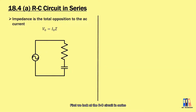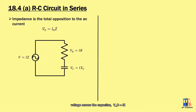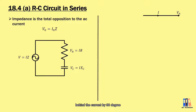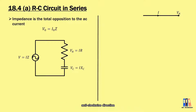First, we look at the RC circuit in series. We have the AC voltage V = IZ, the voltage across the resistor VR = IR, and the voltage across the capacitor VC = IXC. Now we are going to draw the phasor diagram. Conventionally, we draw the direction of the current to the right, and the voltage across the resistor is in phase with the current. For the voltage across the capacitor, we have learned that it is lagging behind the current by 90 degrees. The positive direction in the phasor diagram is the anti-clockwise direction, so the voltage across the capacitor will be 90 degrees in the clockwise direction, which is lagging behind.